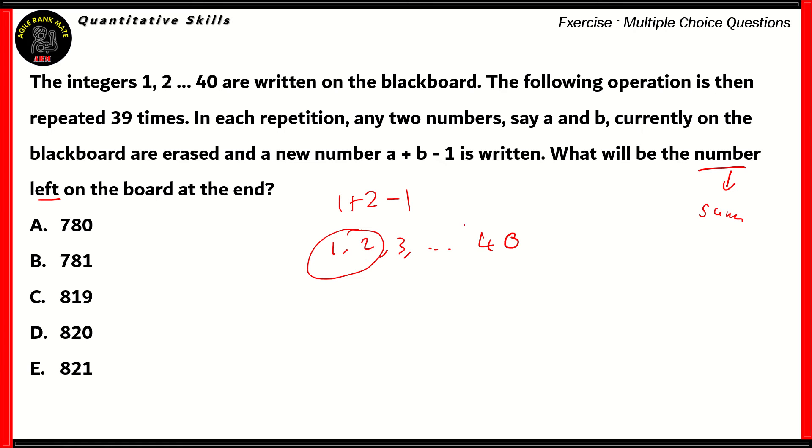As you can see, if you were to sum up all of the integers on the blackboard and then undertake this operation, the total sum reduces by 1 in every repetition. At the final stage, you would have repeated this operation 39 times, so a total of 39 would be removed from the sum of the integers 1 to 40.